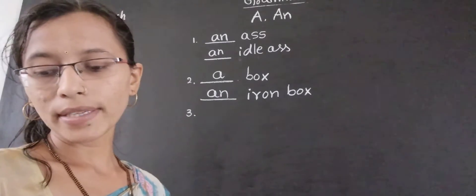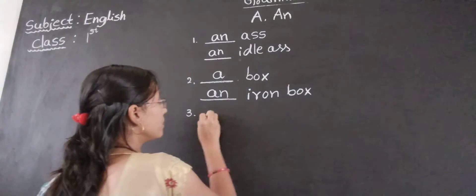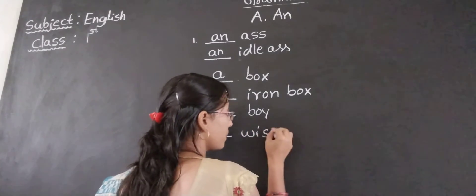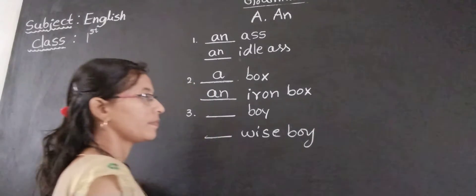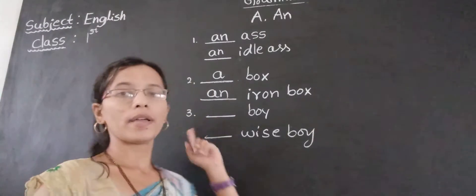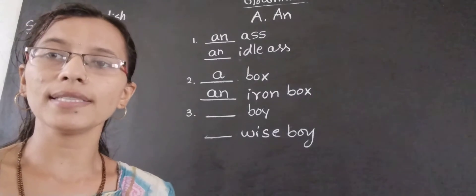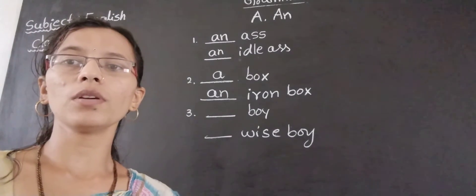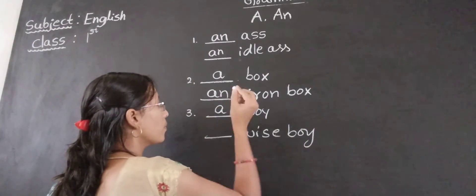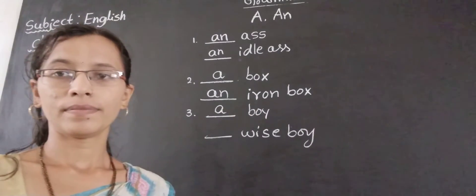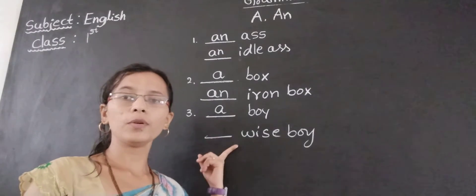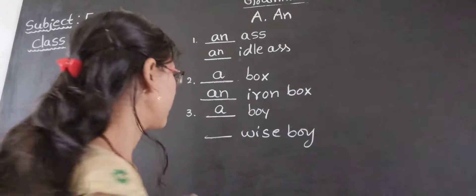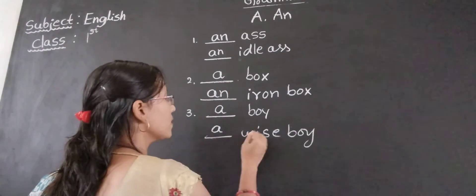Boy, wise boy. So boy — B, that is a consonant sound. Beginning of consonant sound, we have to use A. A boy. W also means that is a consonant. So again, we have to use A. A wise boy.